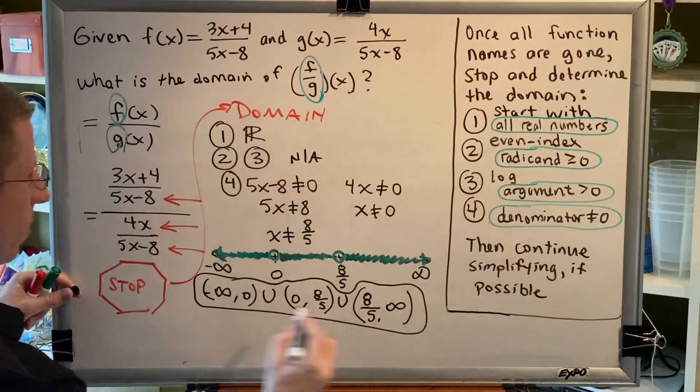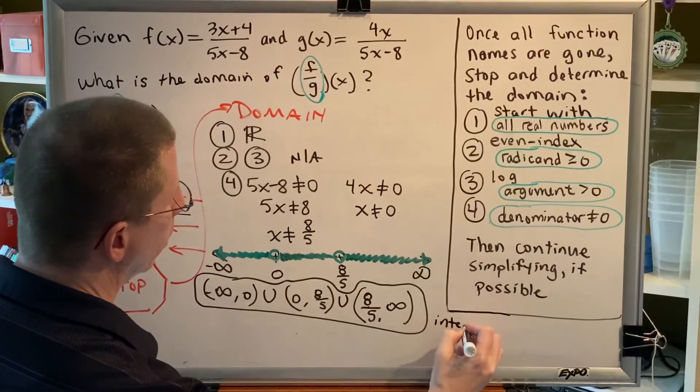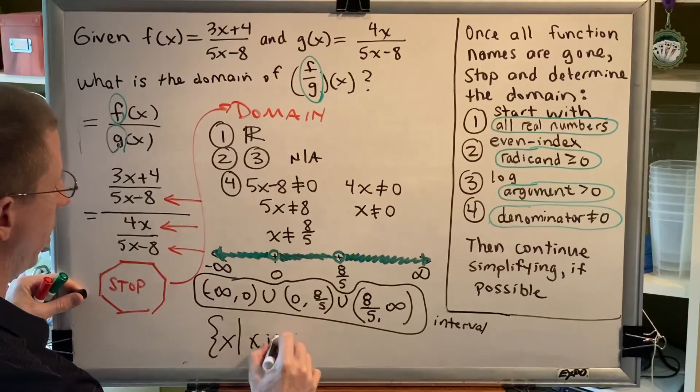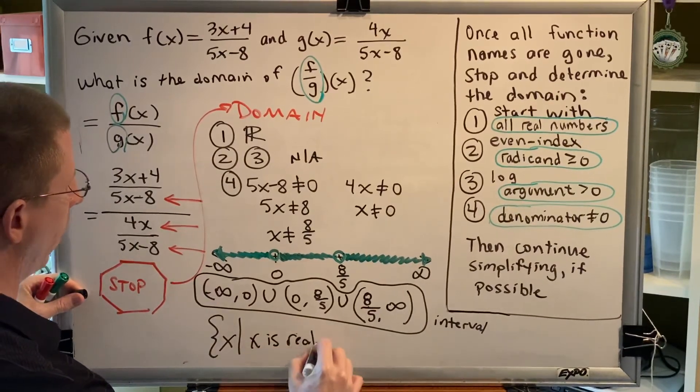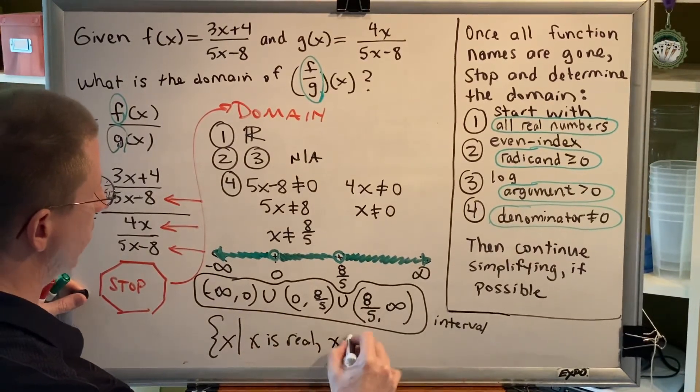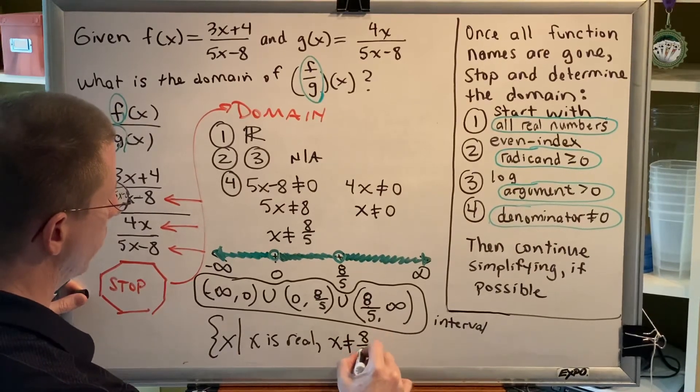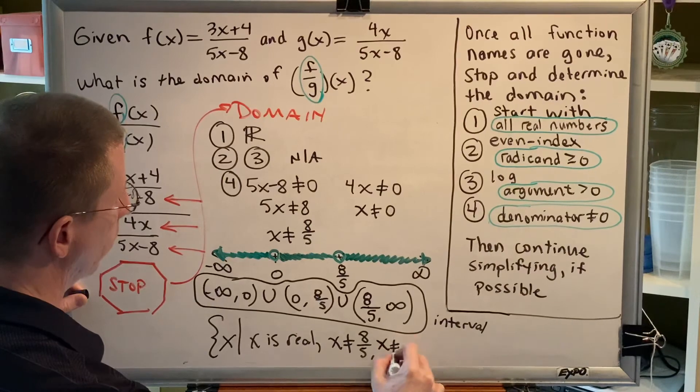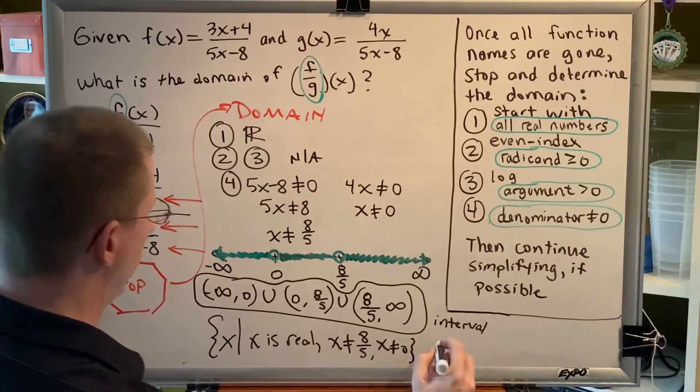As a set, we would write the set of all x such that x is real. However, x is not equal to eight fifths, and x is not equal to zero. This is set notation.